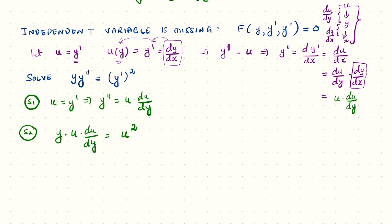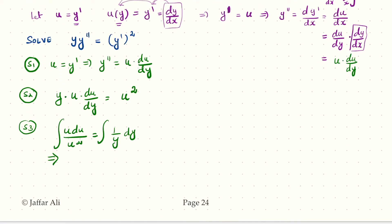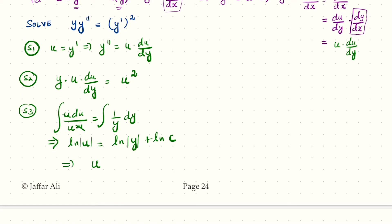Applying variable separable: du/u equals dy/y. Integrating both sides gives ln|u| equals ln|y| plus ln|c|, which means u equals c₁·y. Now our goal is to find y in terms of x, not u in terms of y, so we proceed to the next step.